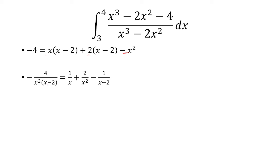Or, if you want, x squared times x minus 2. And so this is what we simplified it down to previously. And we're just going to replace it with what we just found. 1 over x plus 2 over x squared minus 1 over x minus 2.